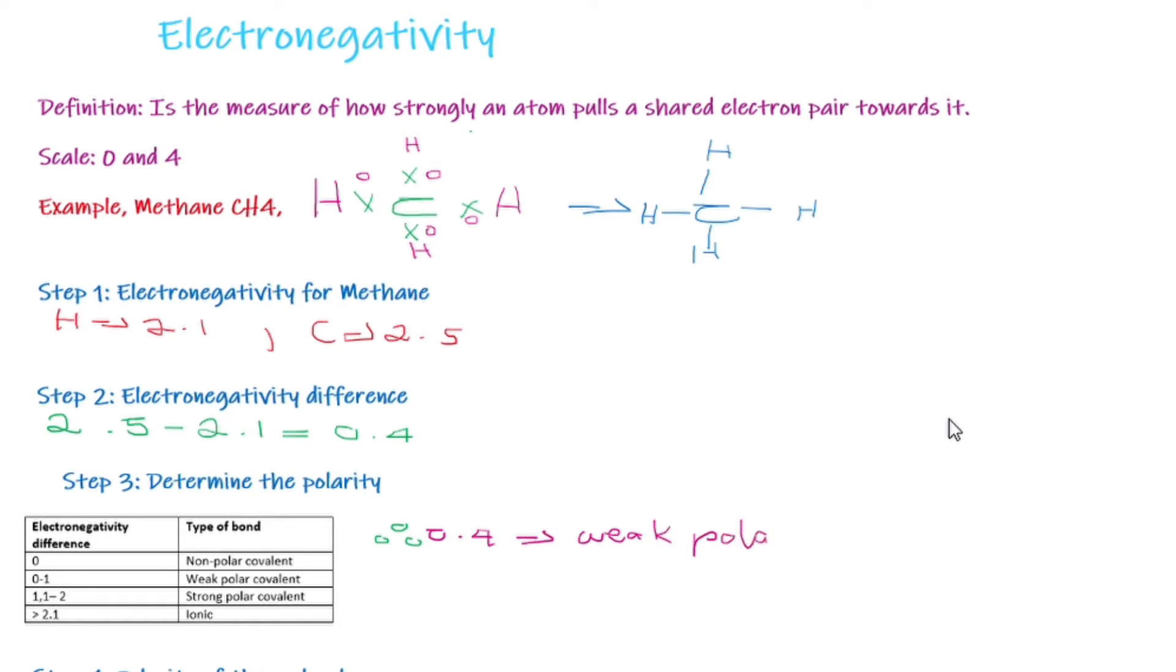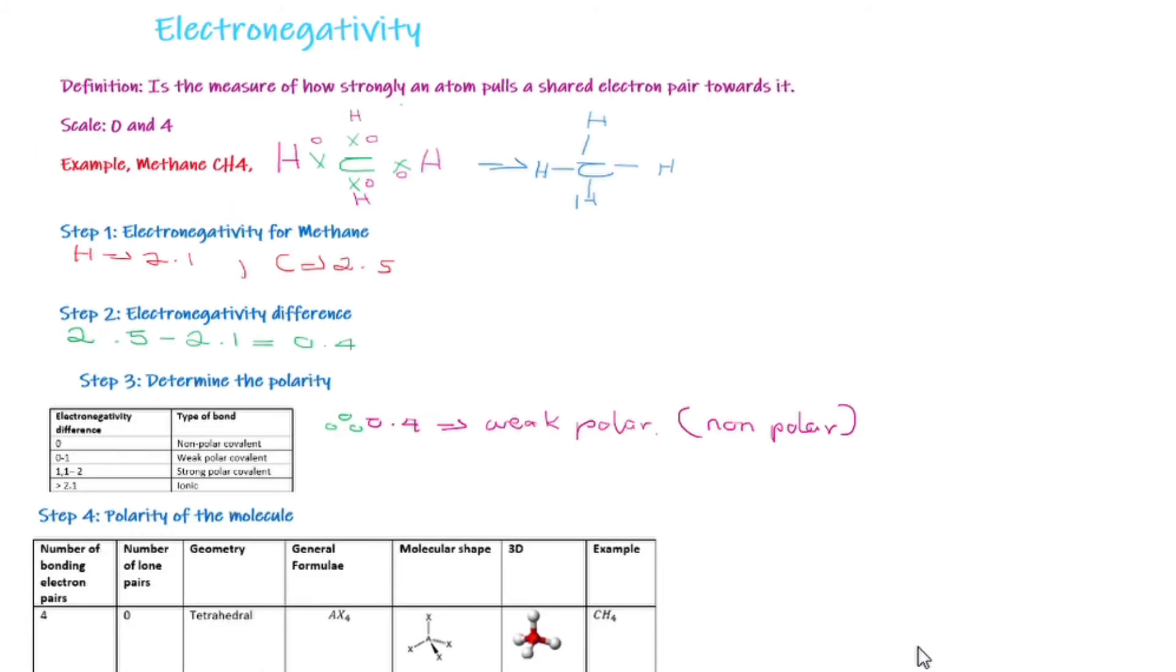And therefore, we can say that it is too weak to be considered a true polar, and therefore, we can alternatively just say it is a non-polar bond between the hydrogen and the carbon atoms.